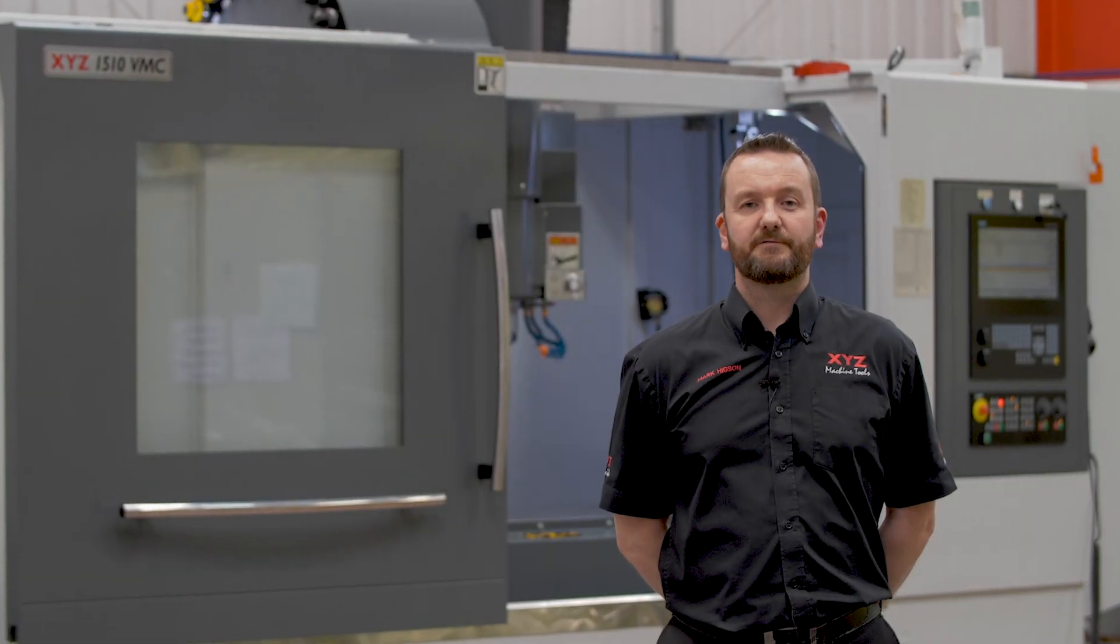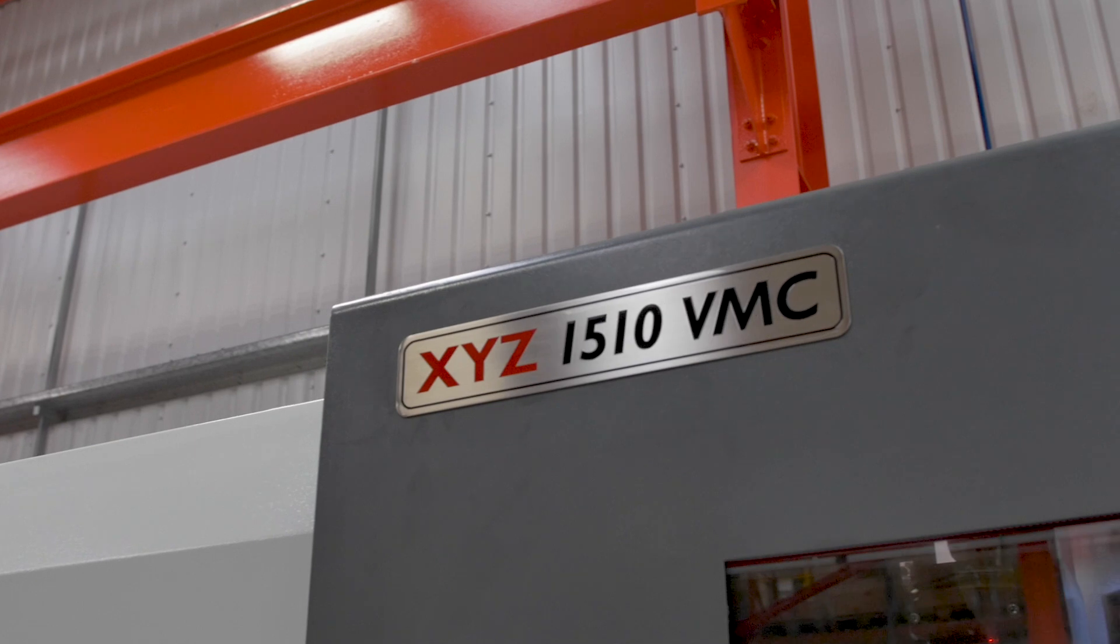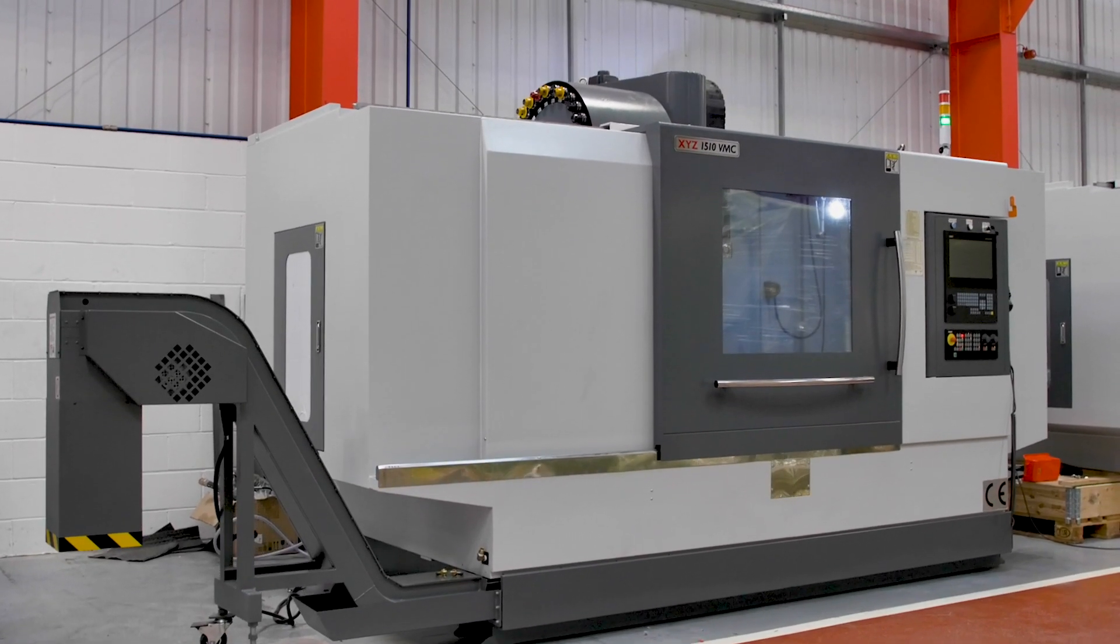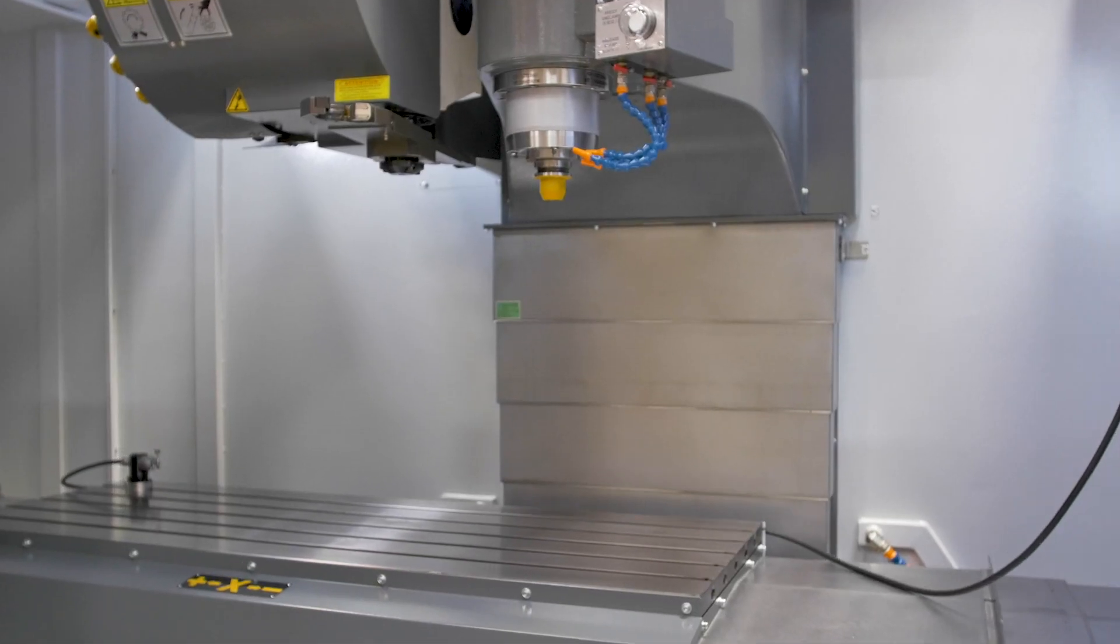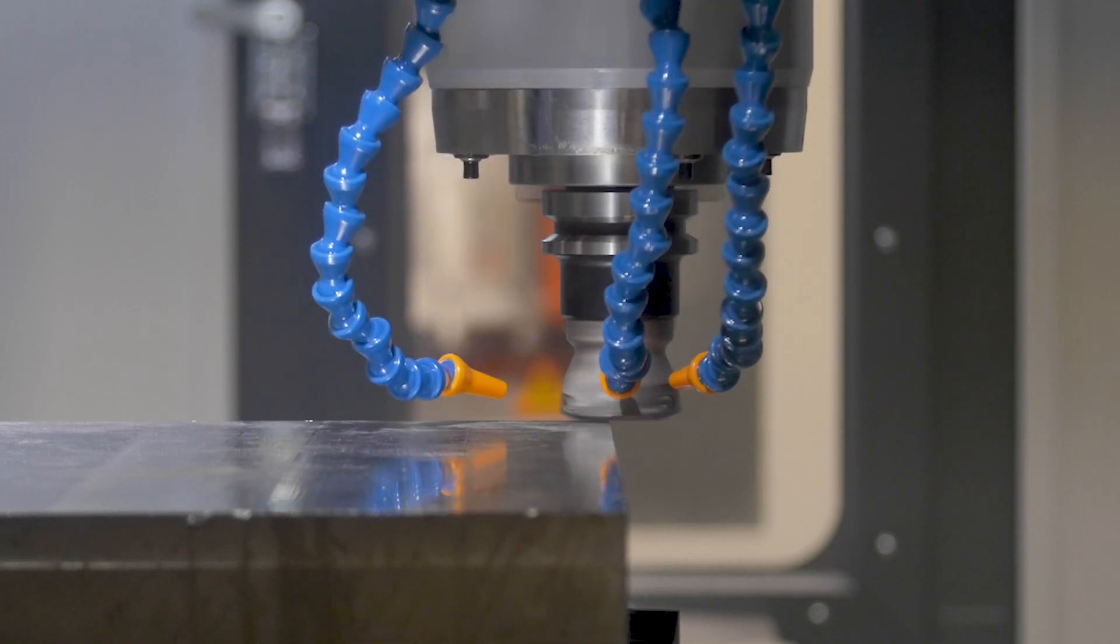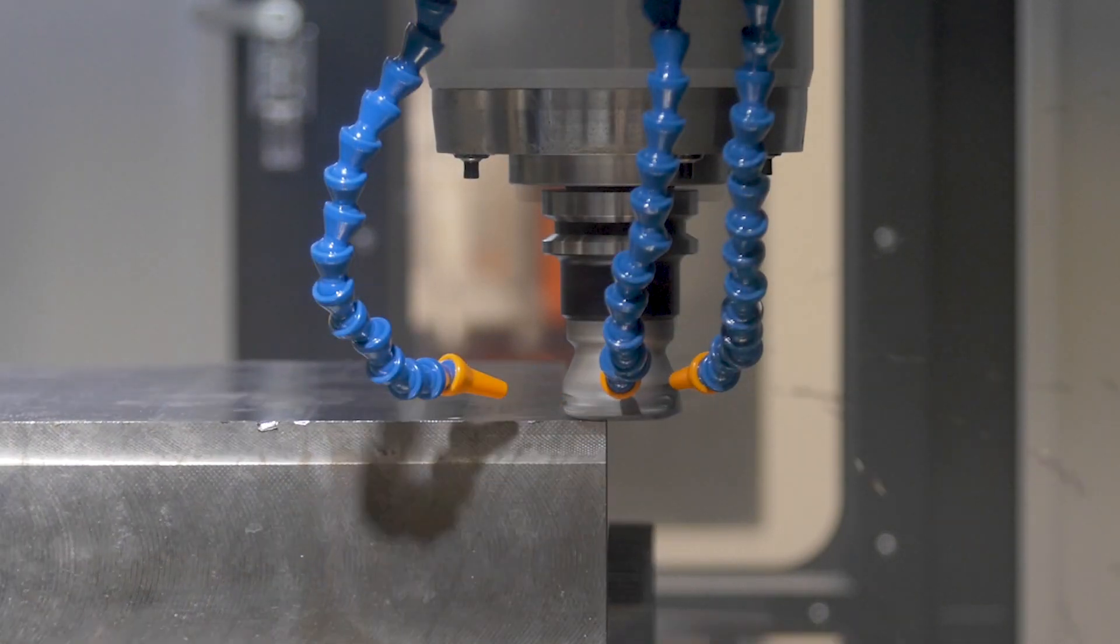Today we're going to be looking at the XYZ 1510 HD VMC with its 1500mm x 600mm x 600mm X, Y and Z axis travels. There are many other machines in the HD VMC range so please check out our website for details.